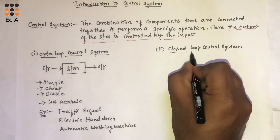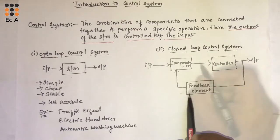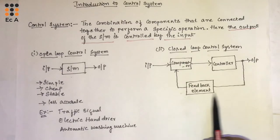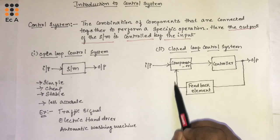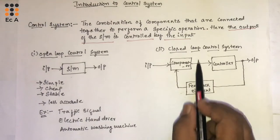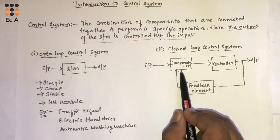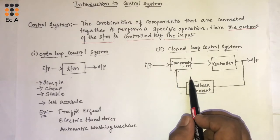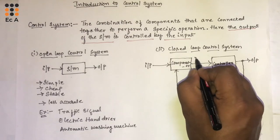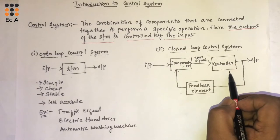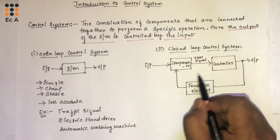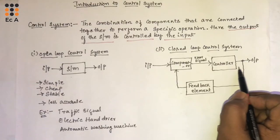Now let us understand the closed loop control system. This figure shows the closed loop control system. Here, the output is fed back to the input, and the comparator will compare the output with the input and give a signal known as the error signal. The controller, depending upon the error signal from the comparator, provides the output.